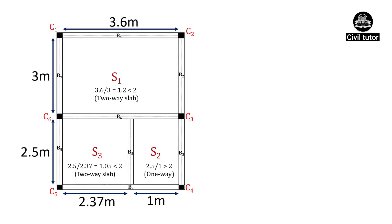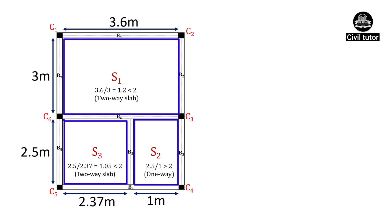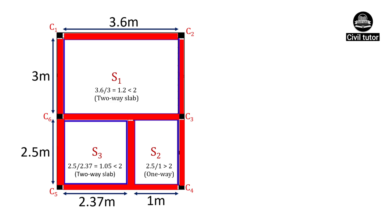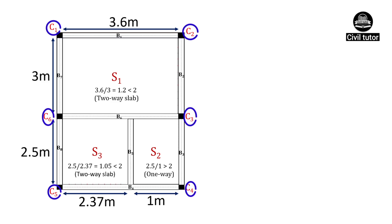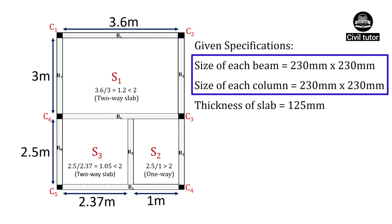For illustration, let's consider a framed structure with 3 slabs S1, S2, and S3, which are supported by 8 beams numbered B1 to B8 and 6 columns numbered C1 to C6. The size of each beam and each column is taken as 230 x 230 mm and the thickness of slab is assumed to be 125 mm.